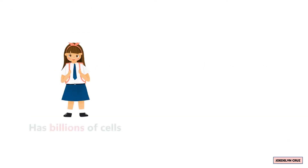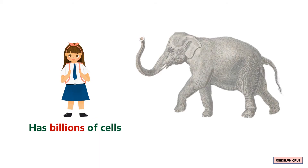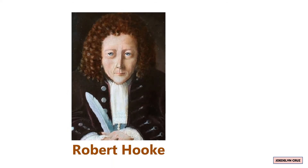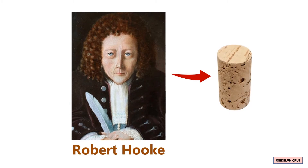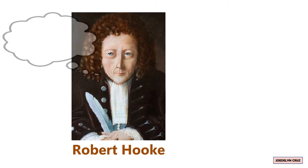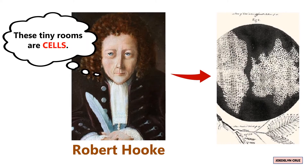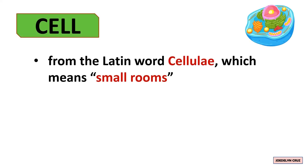Your body has billions of cells, while very large animals like elephants have trillions of cells. Robert Hooke was the one who discovered cells in 1665 by examining a very thin slice of cork. He thought the close-up view resembled small, empty rooms, and he referred to these tiny rooms as cells. The word 'cell' comes from the Latin word cellulae, which means small rooms.